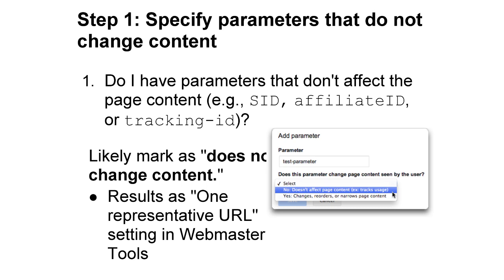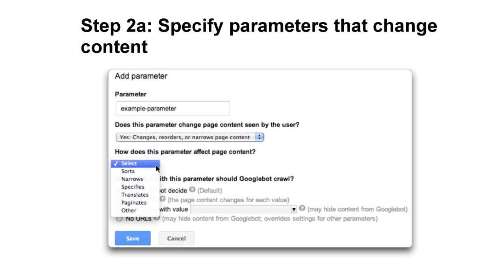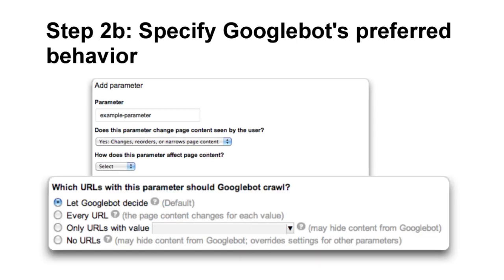Once step one is completed for all parameters that don't actually change page content, let's move on to step two, which comes in two parts. The first part is to specify the parameters that change page content — you'll select 'yes, this changes, reorders, or narrows page content,' and then specify the type of page content effect, whether that sorts, narrows, specifies, etc. Then step two B is to specify Googlebot's preferred behavior — so given that parameter, how would you like Googlebot to actually crawl those URLs?